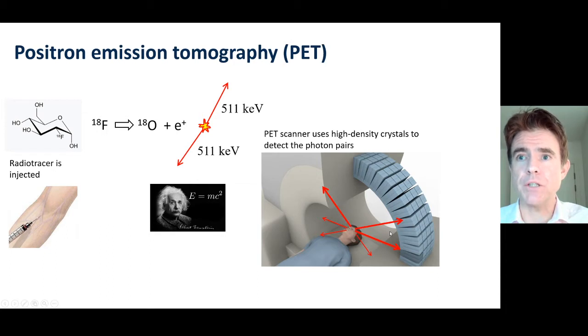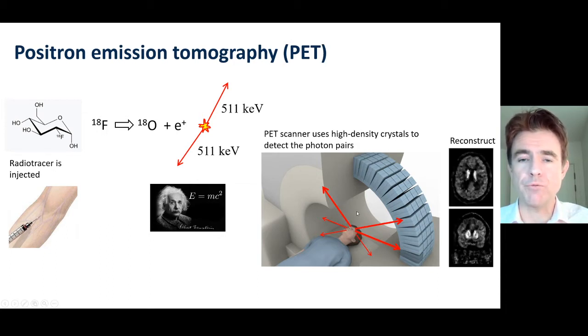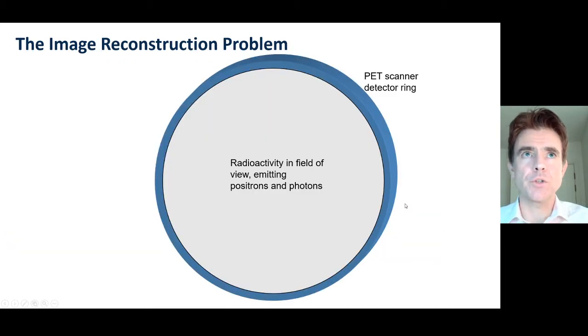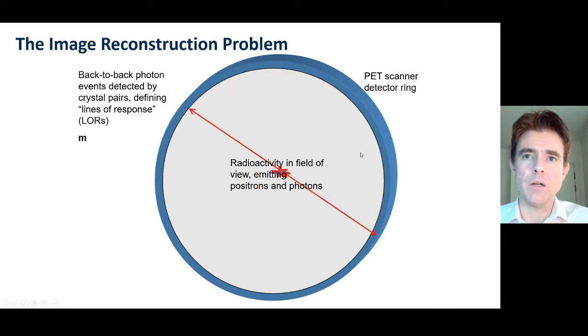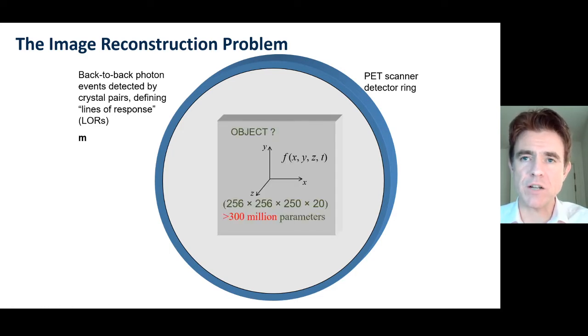I'm depicting those back-to-back photon pairs coming from the radioactive distribution inside the brain. The reconstruction problem is: what is that object or representation of that object, which in general is a 4D function, that explains the measured data? We make measurements along lines of response.